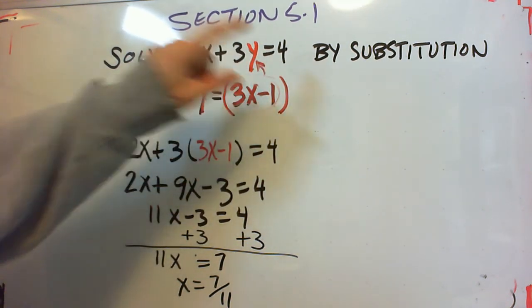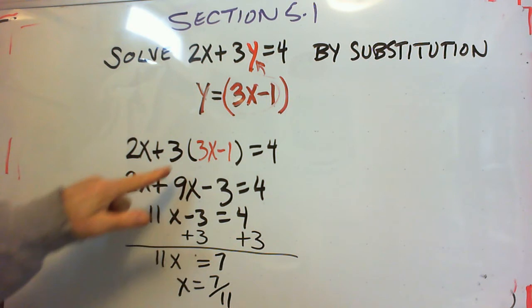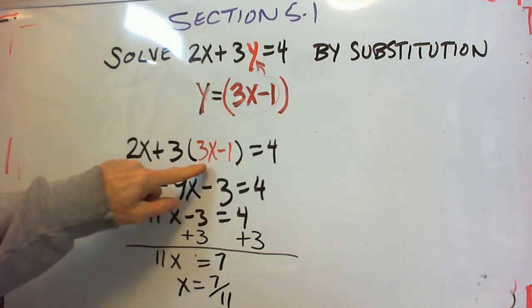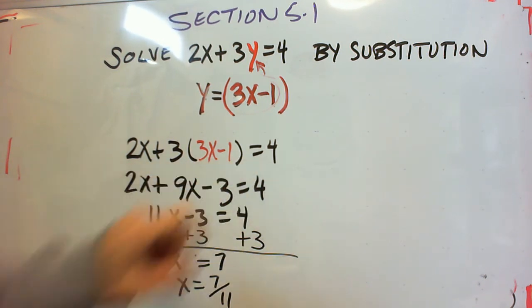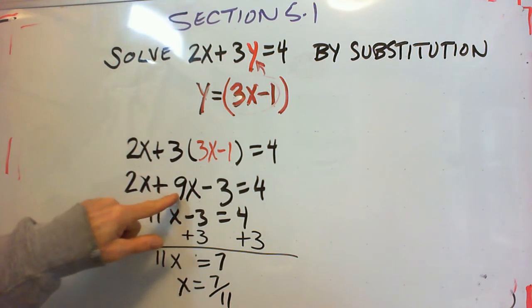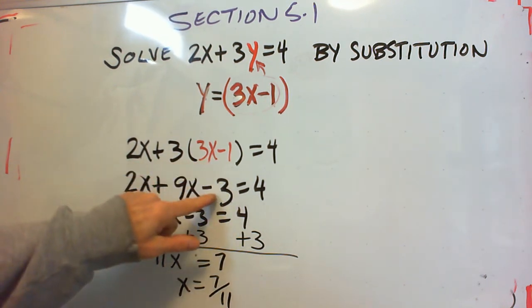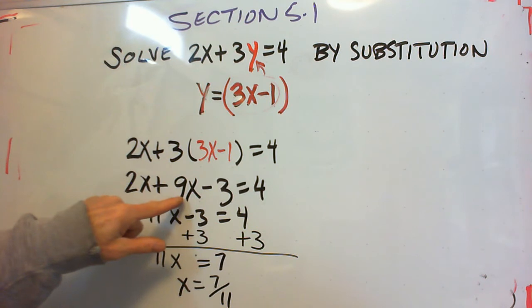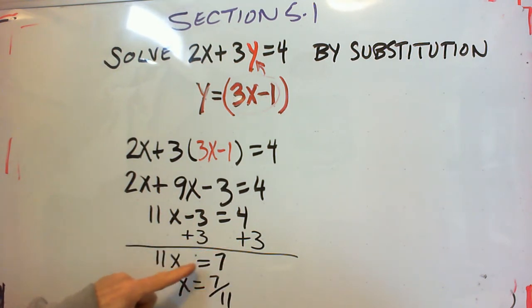So when we plug in the 3x minus 1 for y and use the parentheses we get 2x plus 3 times the quantity 3x minus 1 equals 4. When we distribute we get 2x plus 9x minus 3 equals 4. Combine the like terms 11x minus 3 equals 4. Add 3 to both sides and we get 11x equals 7. Dividing both sides by 11 gives us x equals 7 elevenths.